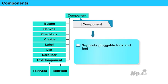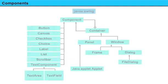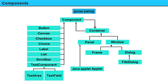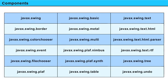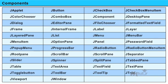JComponent supports pluggable look and feel. All these components are lightweight components. All of Swing's components are represented by classes defined within the main package javax.swing. This package must be imported into any program that uses Swing. Packages defined by Swing and some of the Swing component classes used to create a Swing GUI are displayed on the screen.